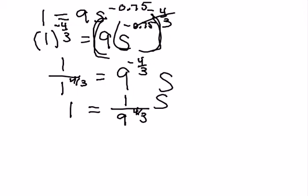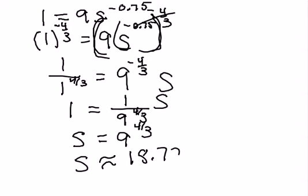So what is S? When I do nine to the four-thirds power, I actually get approximately 18.721.